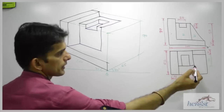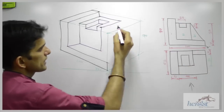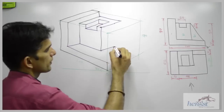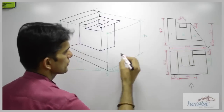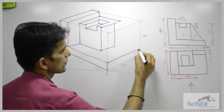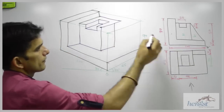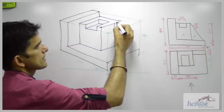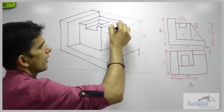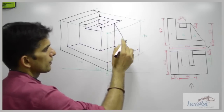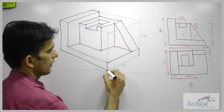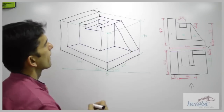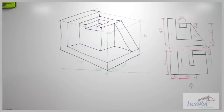Now I need to draw part 3. I have to go behind as well — how much? 30 from here, and I will draw this line. After that, see this line is through and through, so I will take it through and through. They have given 10, so I can take 10 here also and join this. So I got part 3. Then join this to this — we are done. Given the two views, we have drawn the isometric view using these two views.